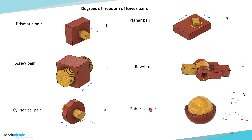The spherical pair has an internal sphere and an external sphere. The relative motion allowed is rotation about all 3 axes — the ball can rotate about the z-axis, x-axis, and y-axis — but it cannot translate in x, y, or z. All 3 degrees of freedom in rotation are allowed, while all 3 translational degrees of freedom are constrained. This is commonly used in ball joints in vehicle suspension components.